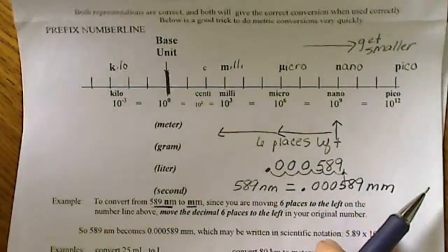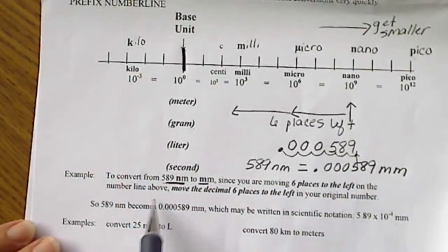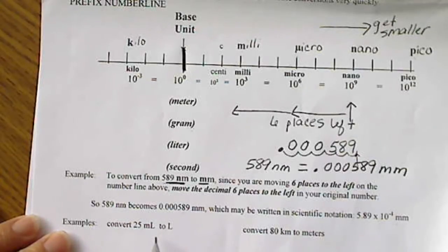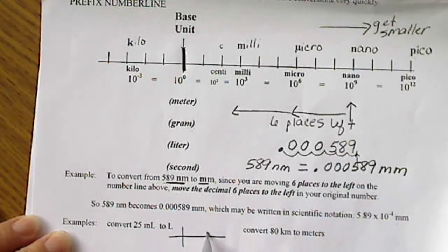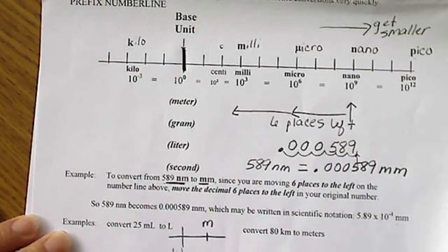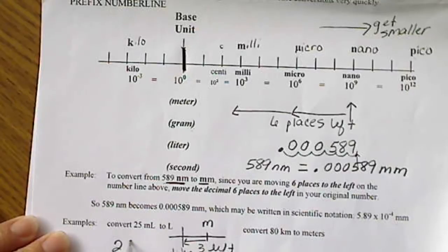So as another example, let's convert 25 milliliters to liters. Again, we're going to start with the prefix milli. And if we just quickly do our number line, milli is right here. The word liter is what we are converting to. And to go from millis to liters, that is three places to the left.